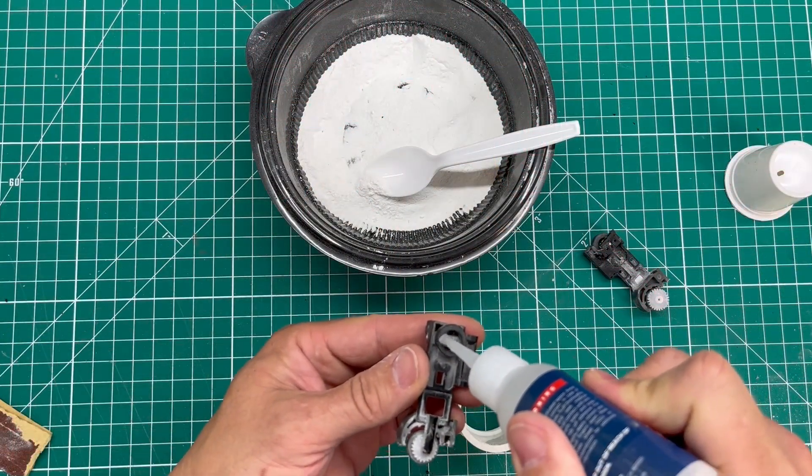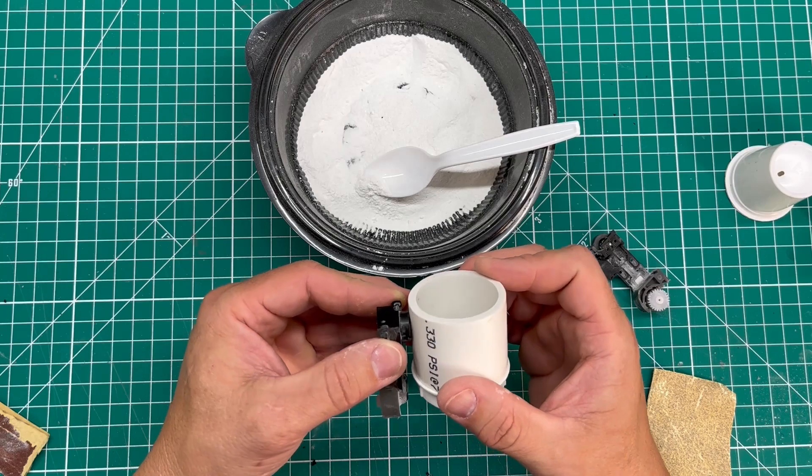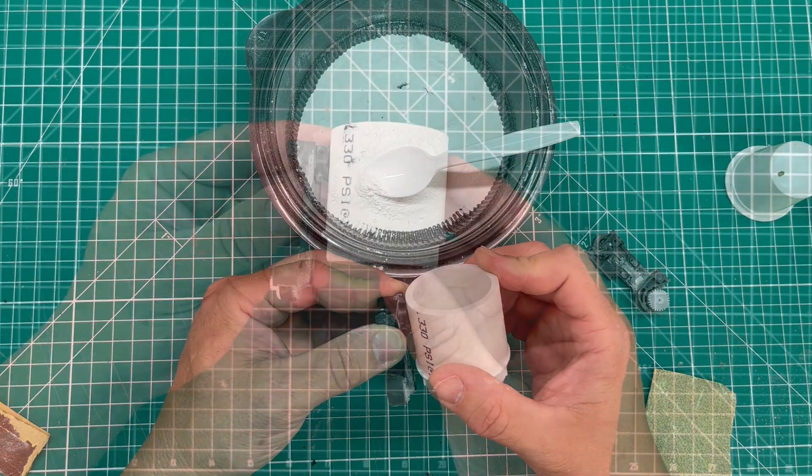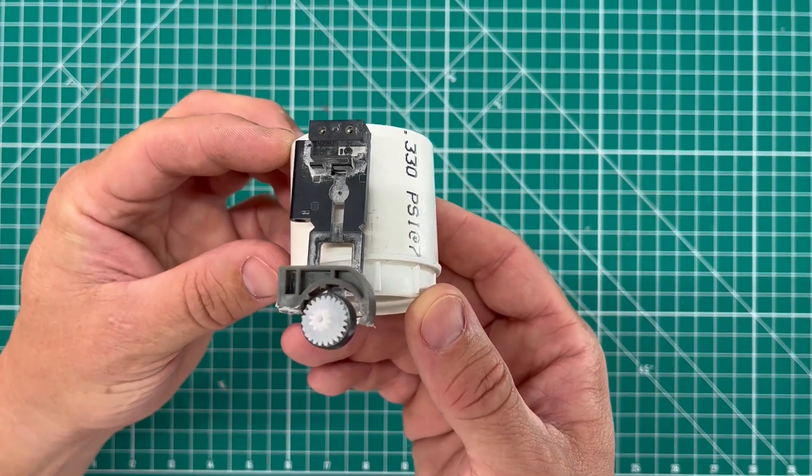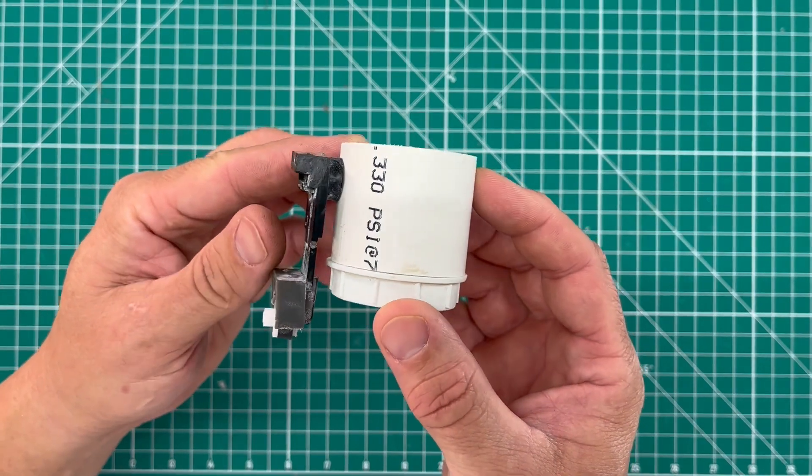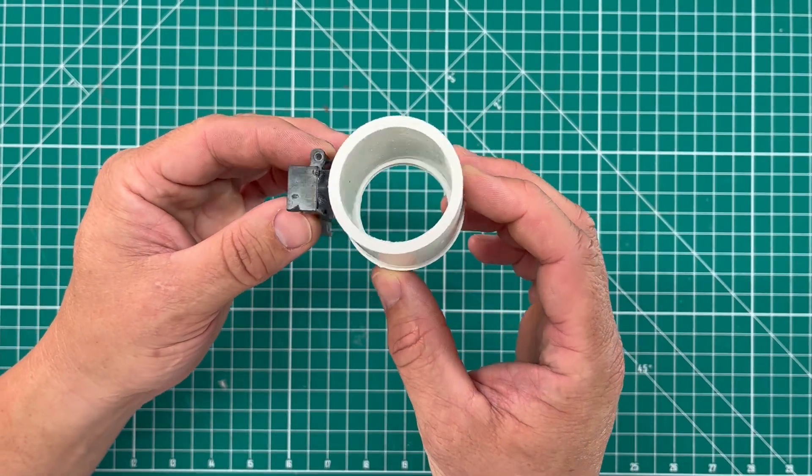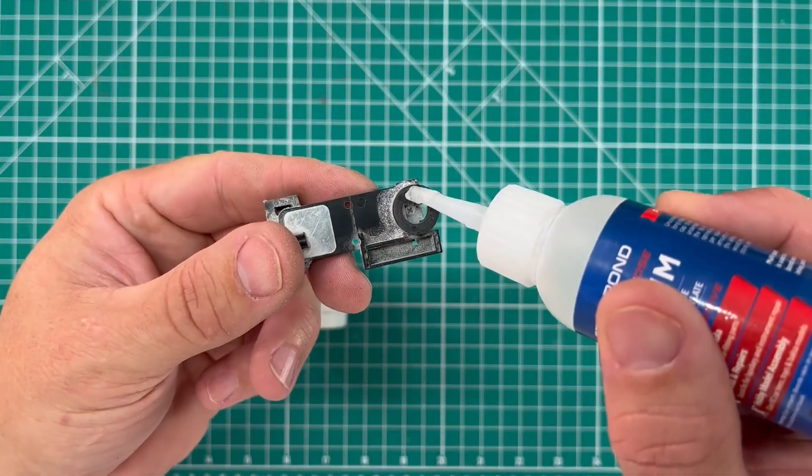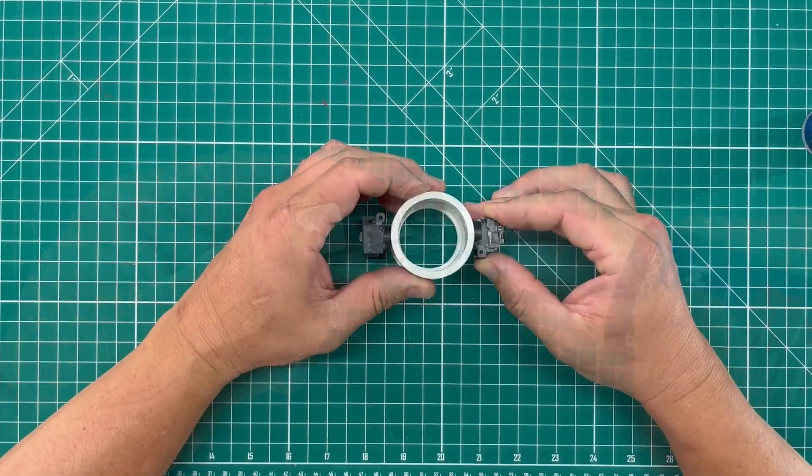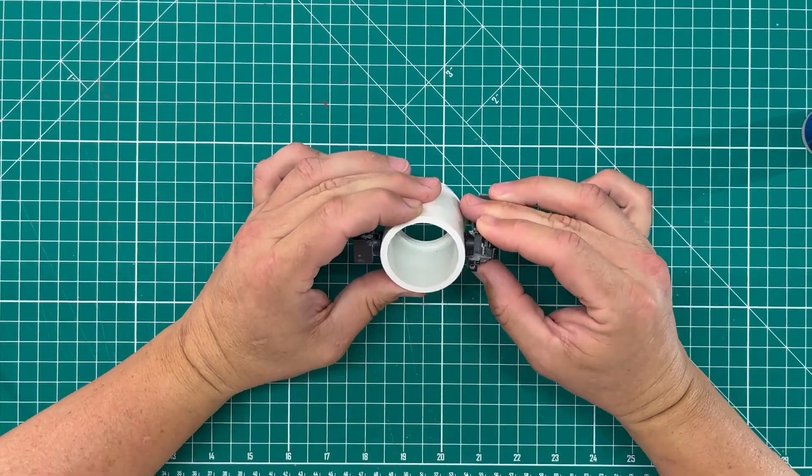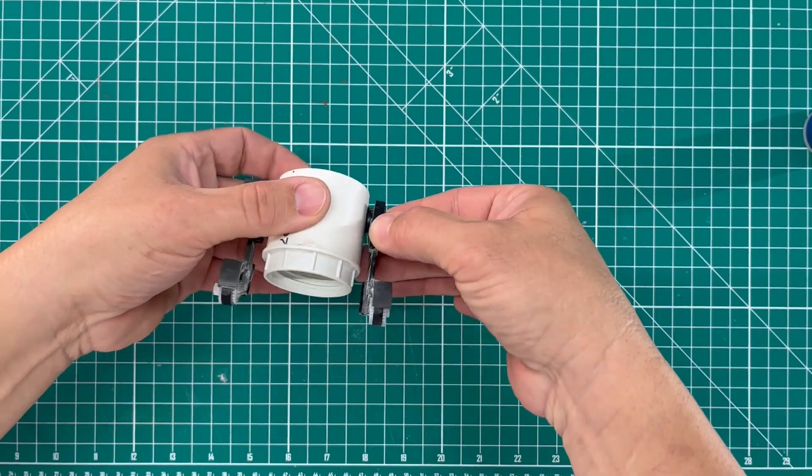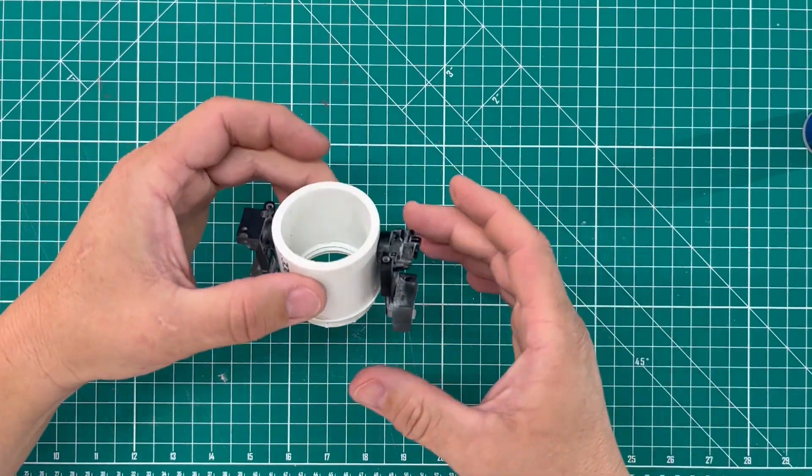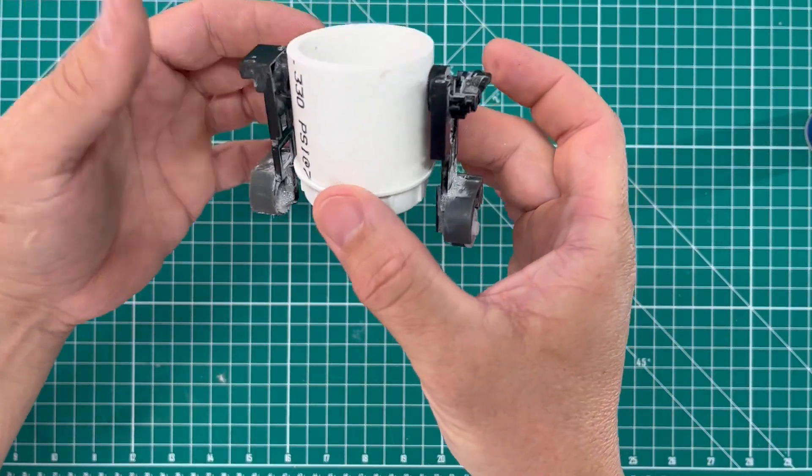With the legs assembled it's time to go ahead and attach them to the body. So first I line up exactly where I want it to go and make sure that the height and the angle is right. And I have the body of the robot tilted back ever so slightly. And once I get one side I go ahead and just repeat that same angle and height on the other side. Careful to make sure that the robot's gonna sit level when everything's done.